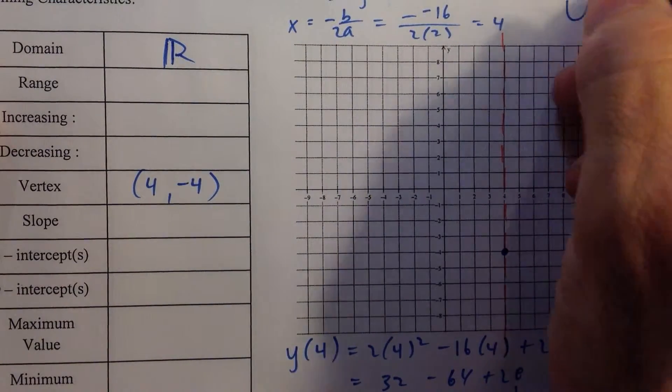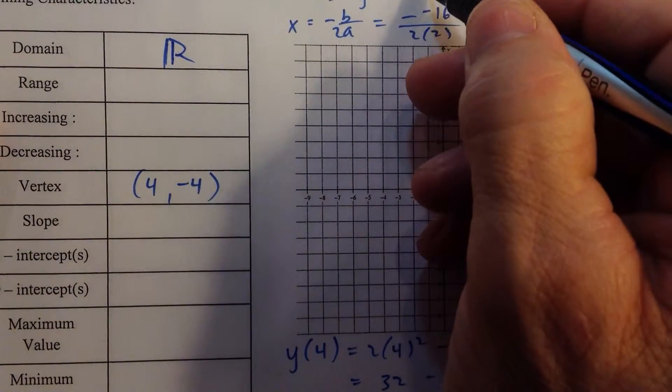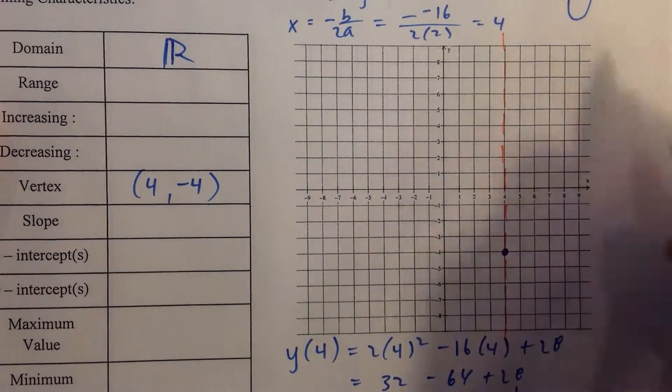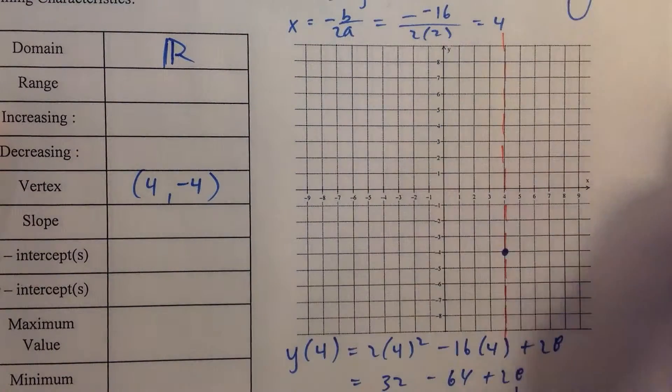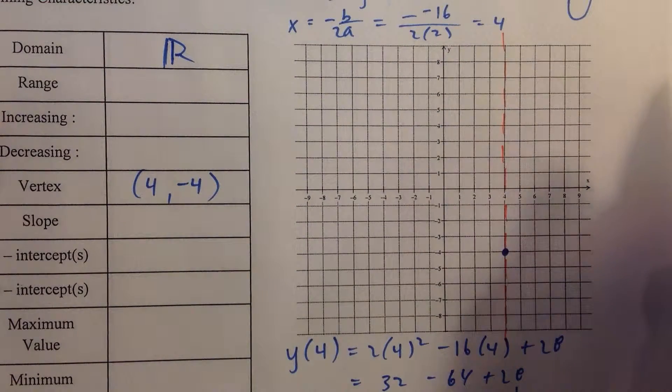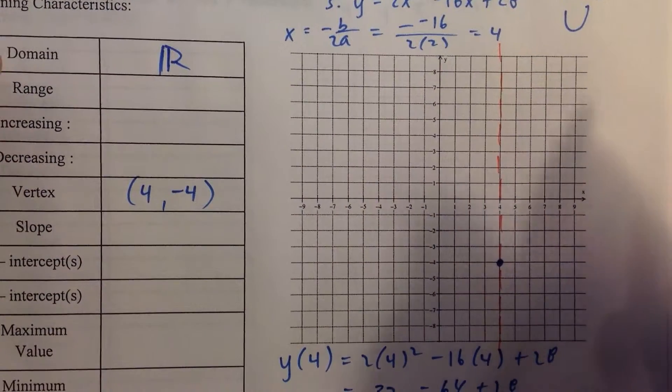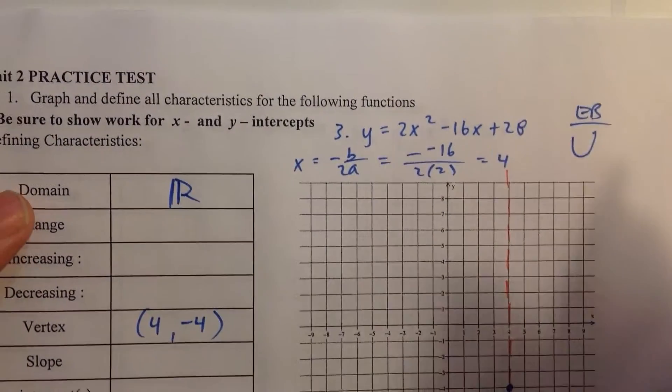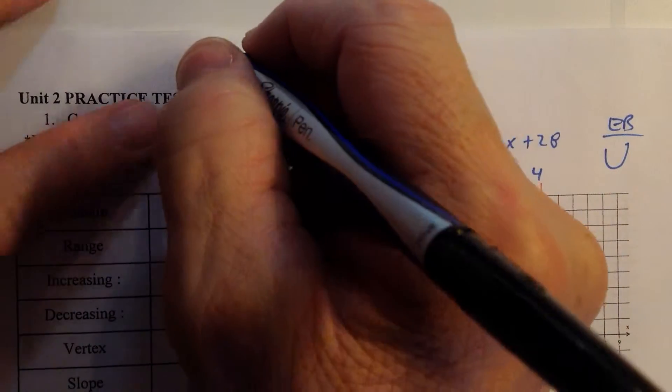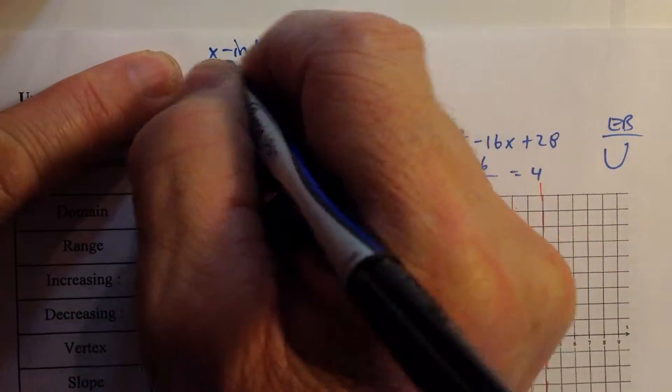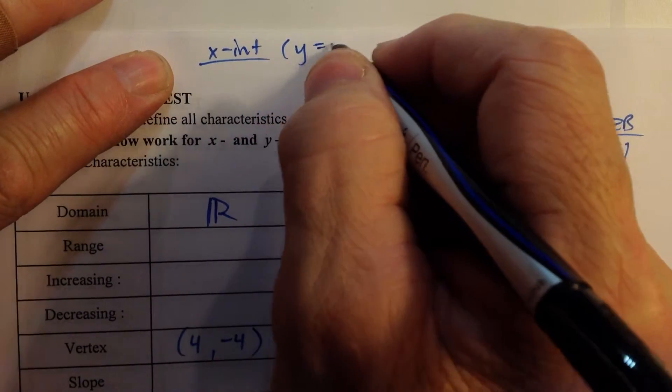But we know this parabola opens up. The end behavior model, a being 2 is positive, it's an even degree. So we know the ends go together and they go up because a is positive. Now let's find the x-intercepts. So the x-intercepts, let's use this space up here.